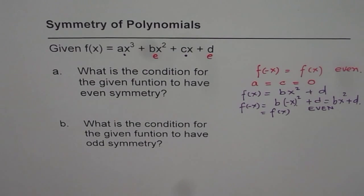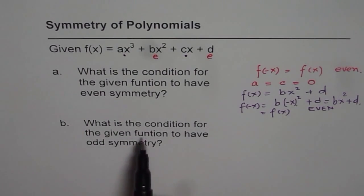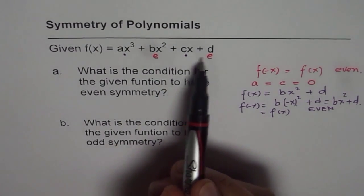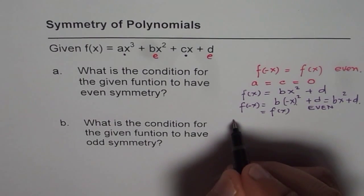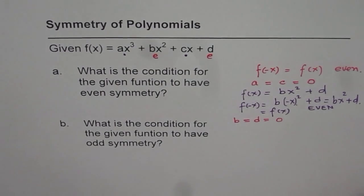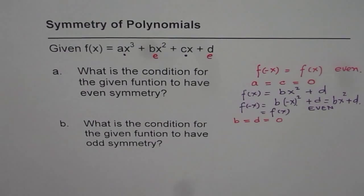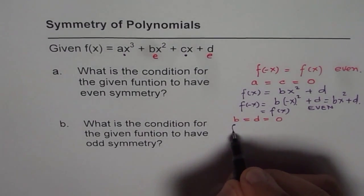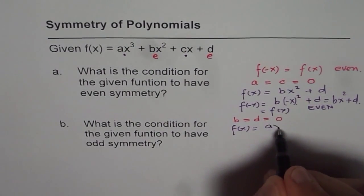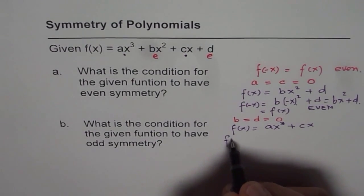Now let us do the same exercise for part B. You can pause the video, do it yourself, and then check with my solution. The question is: what is the condition for the given function to have odd symmetry? For odd symmetry we don't want the even terms. So in this case b and d must equal zero. If that is the case, then the function looks like f(x) = ax³ + cx.